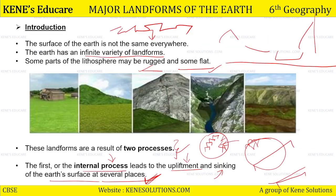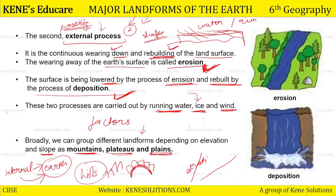Toh chalo ek baar chapter revise kar lete hain. Humne introduction mein padha tha ki jo earth ka surface hota hai, it is not same everywhere. Landforms ki shuruvaat karne se pehle hi humne yeh jaan liya tha ki earth ka poora surface ek jaisa nahi hota hai, bahut hi vary karta hai. Hamare earth pe infinite variety of landforms paae jaate hain — kuch portion kaafi rugged hota hai, kuch kaafi flat hota hai. Phir humne yeh jaana tha ki yeh landforms bante kaise hain — do process se: ya toh internally koi na koi changes aa rahe hain earth ke andar, kisi na kisi tariqe ka upliftment ya sinking ho rahi hai, aur ya toh koi external process ho raha hai with the help of erosion or deposition.